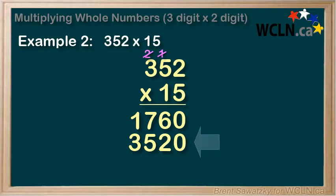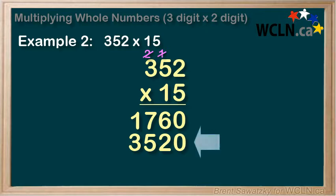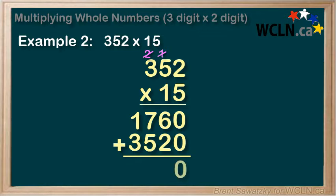At this point, again, we have two answers. The first line is for 352 times 5. The second line is for 352 times 10. As a final step, we'll add our two parts to get our final answer. 0 plus 0 equals 0. 6 plus 2 equals 8. 7 plus 5 equals 12 — mark down the 2 and carry the 1. And 1 plus 3 is 4, plus our extra 1 is 5. So our final answer is 5280.